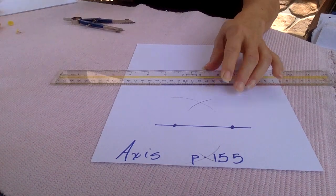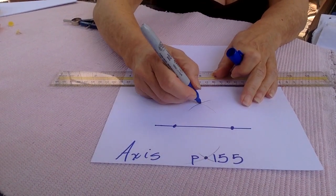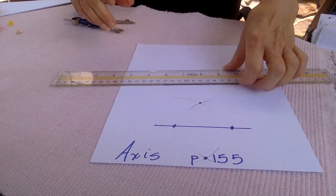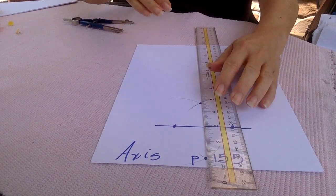I'm going to go to the other endpoint and arc above and below, intersecting those two points. So I have two things here.